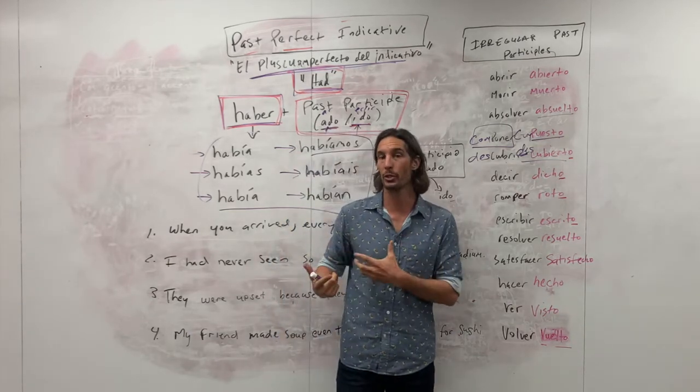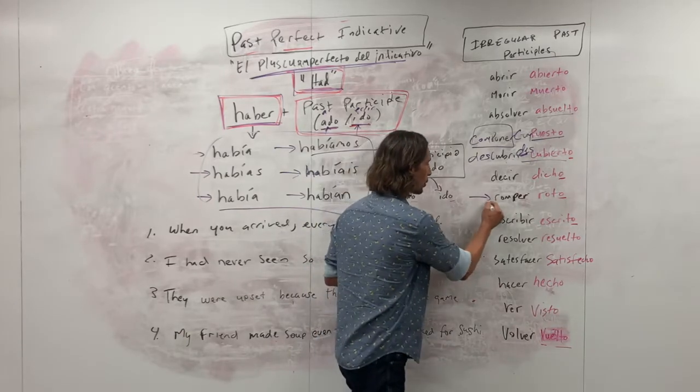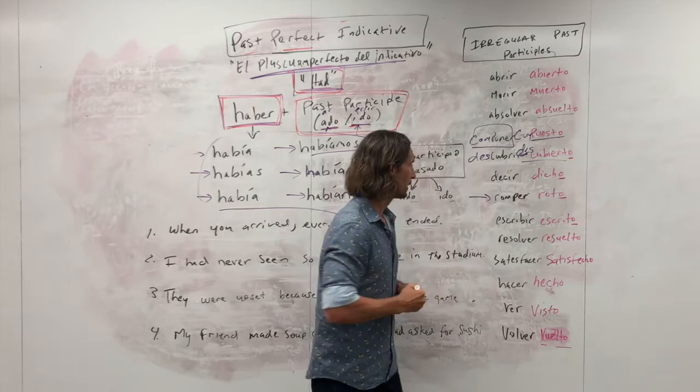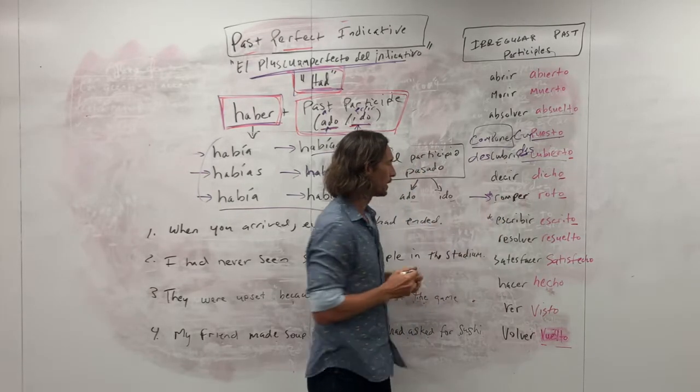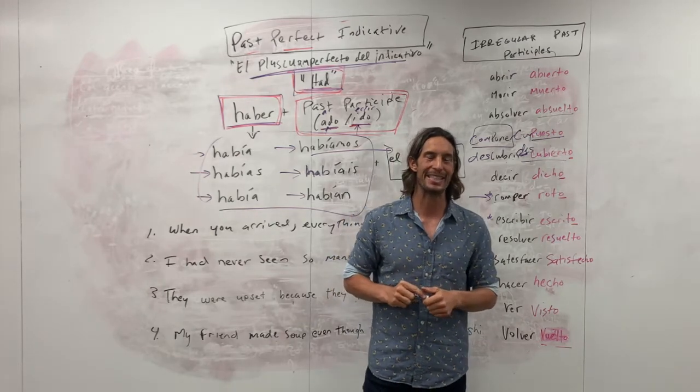Decir means to tell or say, its past participle is dicho. Romper is to break, and its past participle is roto. I'm going to put a little asterisk right there, and I'm going to put it right here too. Escribir is to write, and its past participle is escrito.